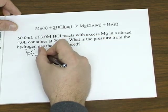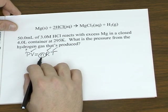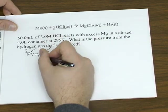but in order to find the pressure we need to know how many moles of hydrogen gas are produced. And that's where the stoichiometry comes in.